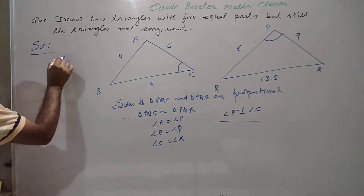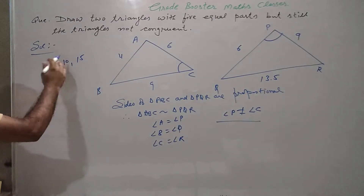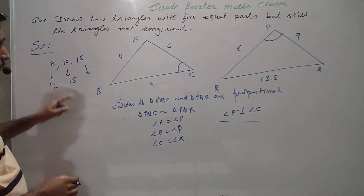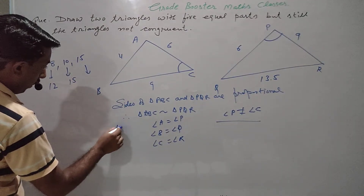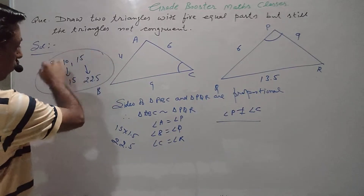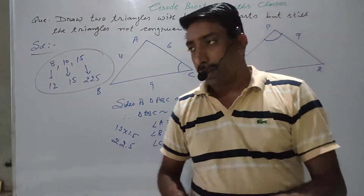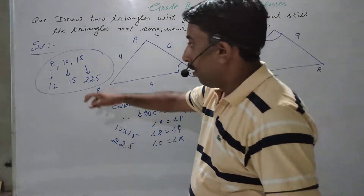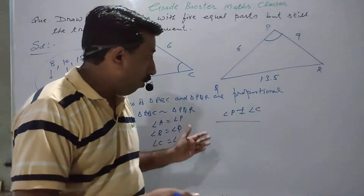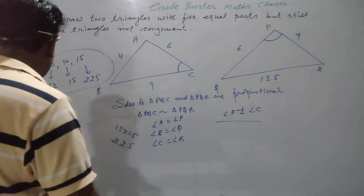If we take another triangle with measures 8, 10, and 15, and scale by 1.5 to get 12, 15, and 22.5, these two triangles will be similar with all angles equal. However, we don't have two sides equal in this case. So we need to find the right technique for selecting measures to ensure two sides are equal between the pair.